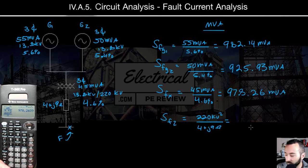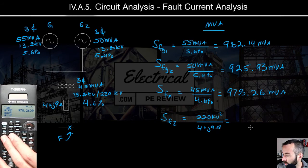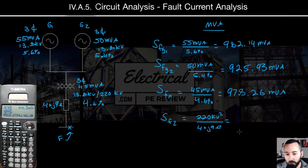So kV squared divided by the impedance of 4 plus J9. That's going to be a whopping 4,914.28 MVA. And once again, we're only concerned with the magnitude, we're going to neglect the angle.